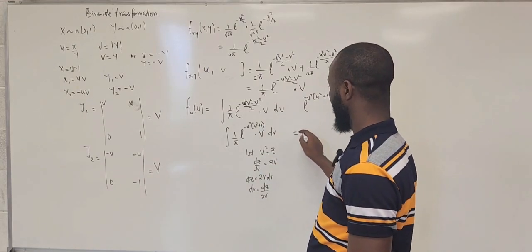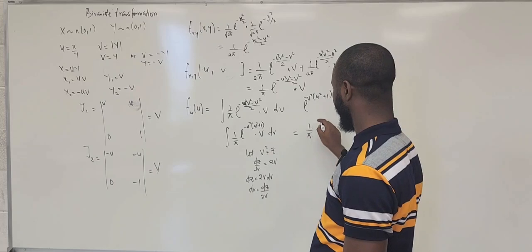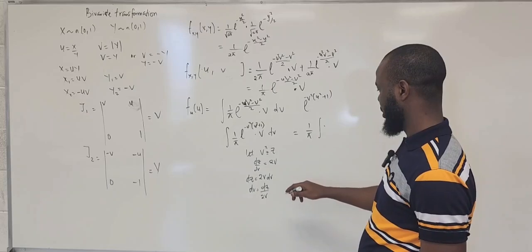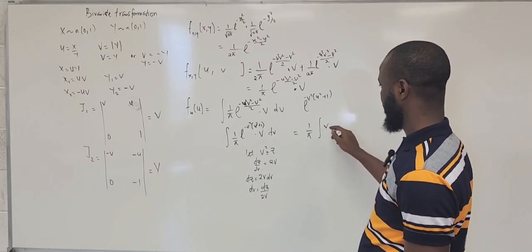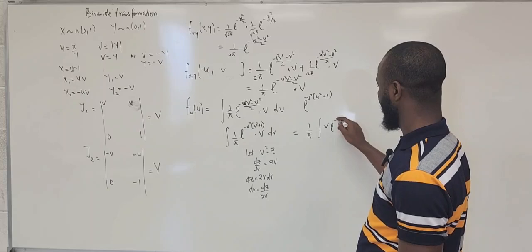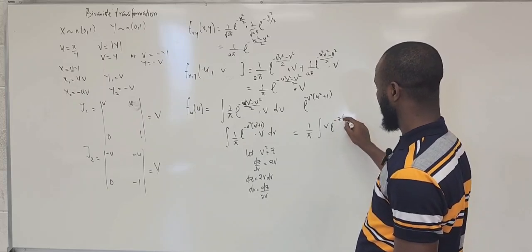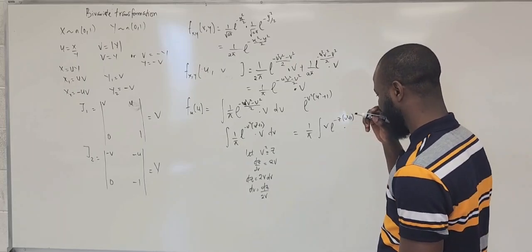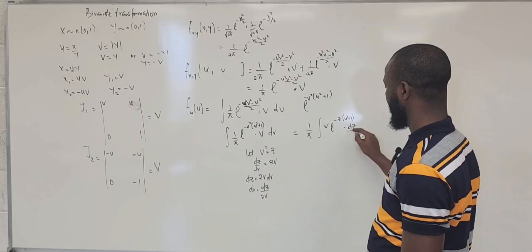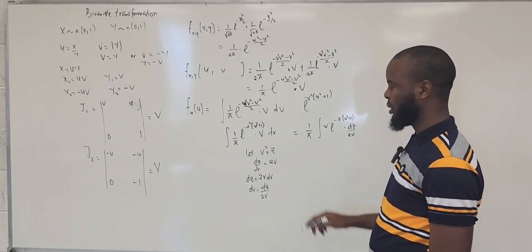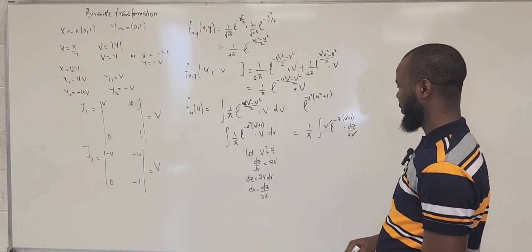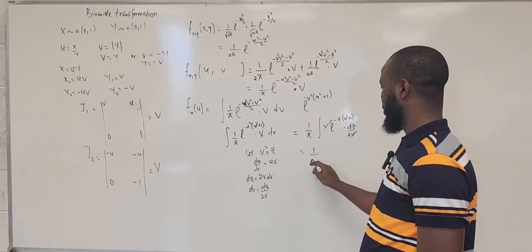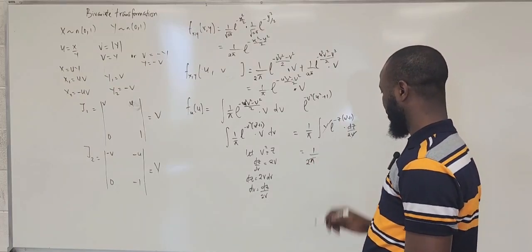Going further, you should have one over pi outside. We have v times exponential of negative z times u squared plus one — where u squared plus one is like a constant — multiplied by dz over 2v. Now v cancels with v, so we have one over 2pi, integral of exponential minus z times u squared plus one, dz.